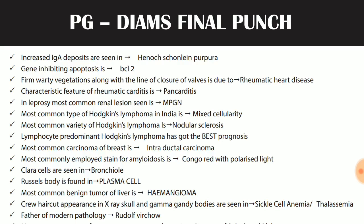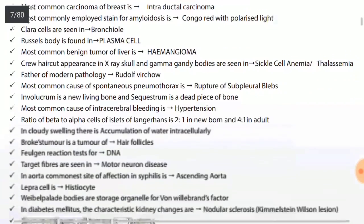Crew haircut appearance on X-skull and Gamma-Gandy bodies are seen in both sickle cell anemia and thalassemia. Father of modern pathology is Rudolf Virchow.